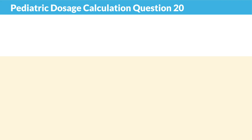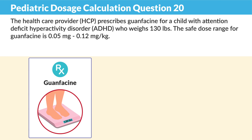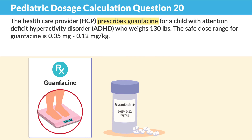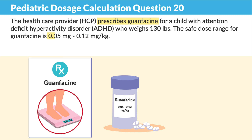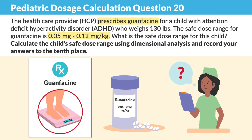Question 20: The HCP provider prescribes a certain medication for a child with ADHD who weighs 130 pounds. The safe dose range for this medication is 0.05 milligrams to 0.12 milligrams per kilogram. What is the safe dose range for this child?